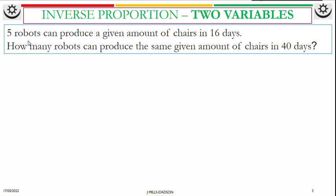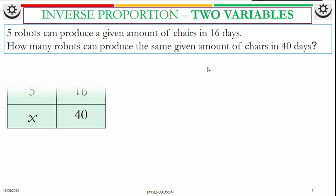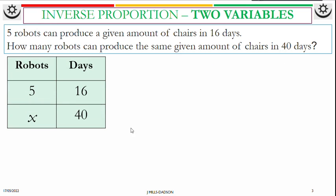Put into a table form, we're talking about robots and days. First, five robots, 16 days. In the second sentence, we are using 40 days, so under days we have 40, but we don't know how many robots.